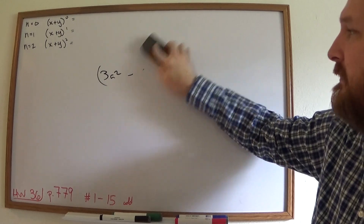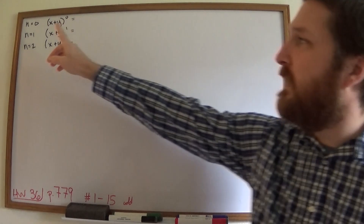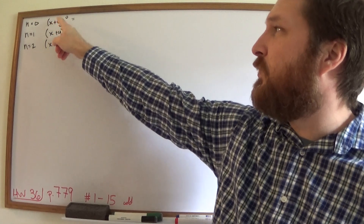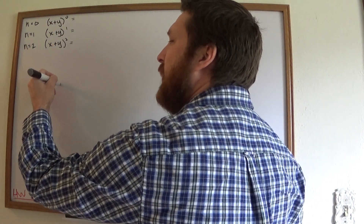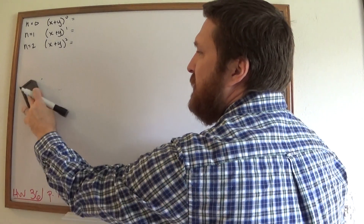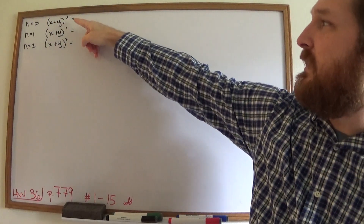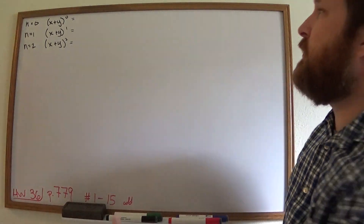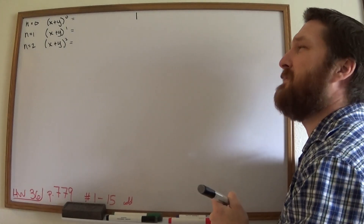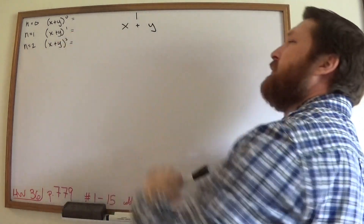So, again, X and Y could be any numbers at all. Let's go ahead and compute the first few cases. I'm writing my N explicitly here. In the case where N equals 0, we want X plus Y to the N — a general formula for that. N equals 0 gives us X plus Y to the 0 equals 1, always, no matter what. X plus Y to the first power is just X plus Y.